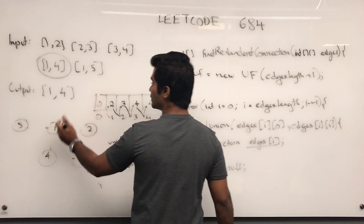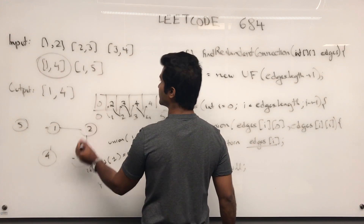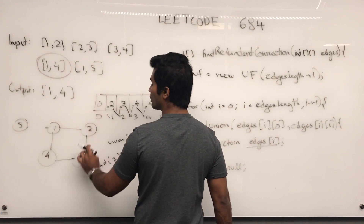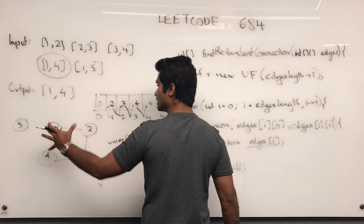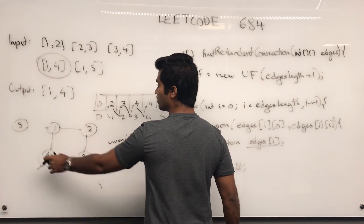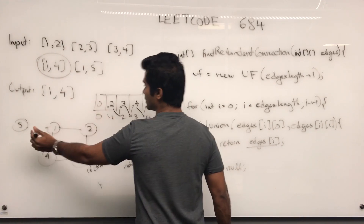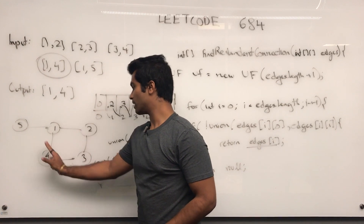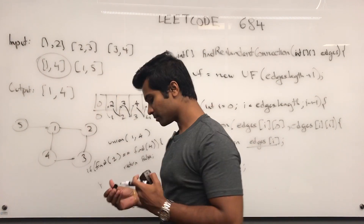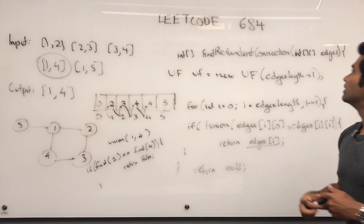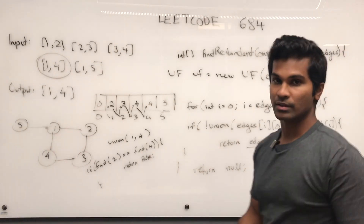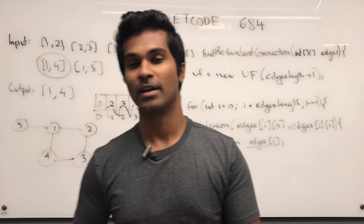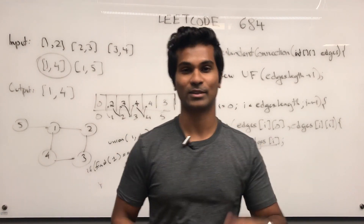So to summarize: one and two get connected, two and three get connected, three and four get connected, and when one and four try to connect, they're already part of the same connected component — which is why we return that edge. Even if we took one and five, removing that would still not make a valid tree. Anyway, that's how you solve LeetCode 684. If you liked the video, please subscribe and like it, and let me know in the comments what other problems you'd like me to solve. Thanks for watching.